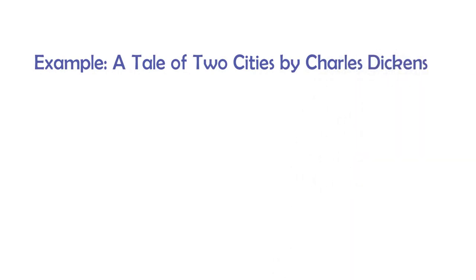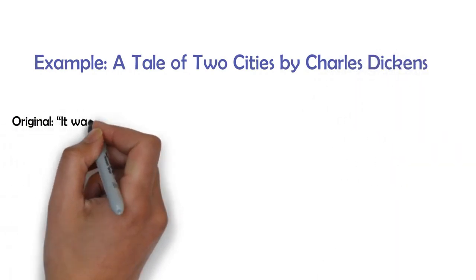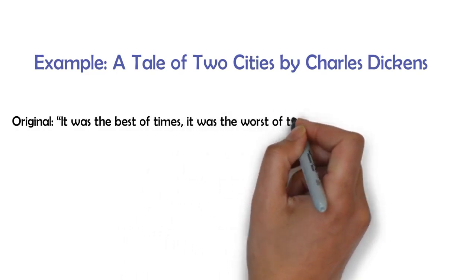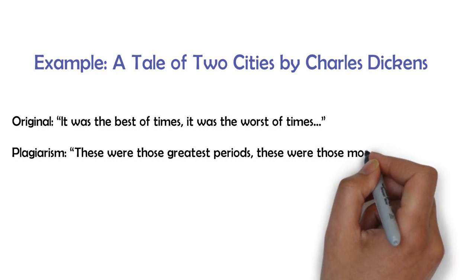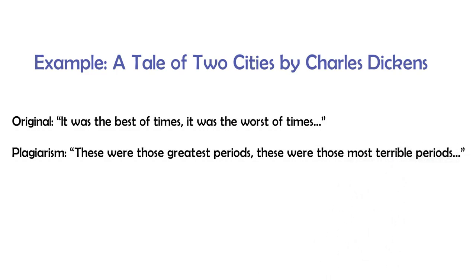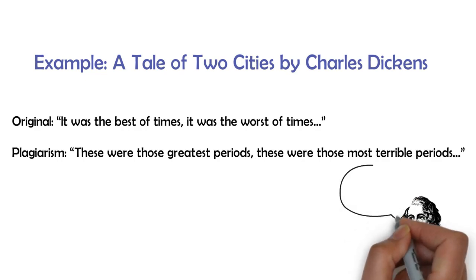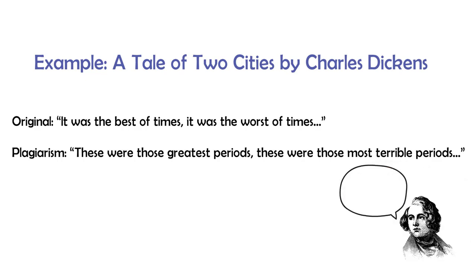The original reads: 'It was the best of times, it was the worst of times.' And the plagiarized version below reads: 'These were those greatest periods, these were those most terrible periods.' Now, even though I've changed every single word in the second version, it's still clearly plagiarism, and anyone with a basic knowledge of English literature would spot that straight away. The reason is that the plagiarized version retains the original sentence structure. So make sure that when you paraphrase, you use not only your own words but also your own sentence structure.